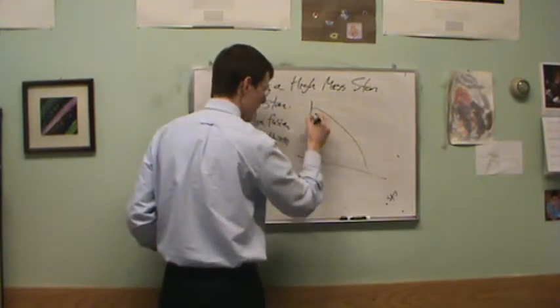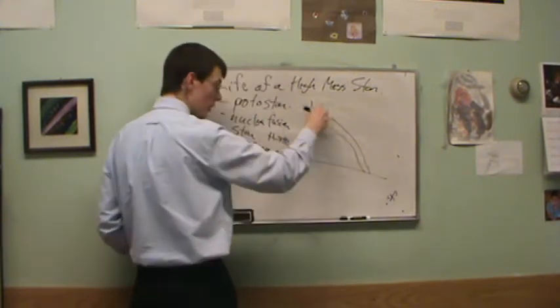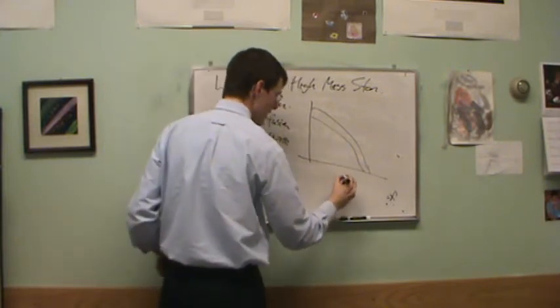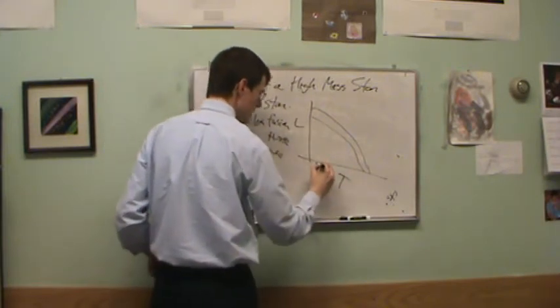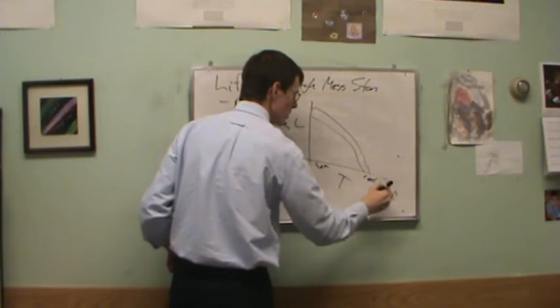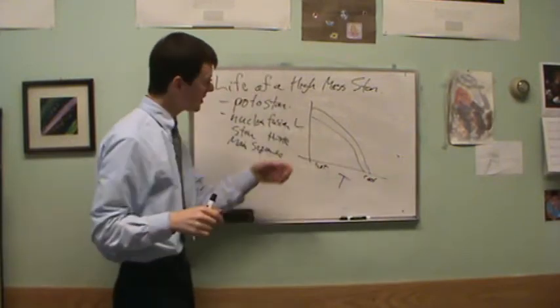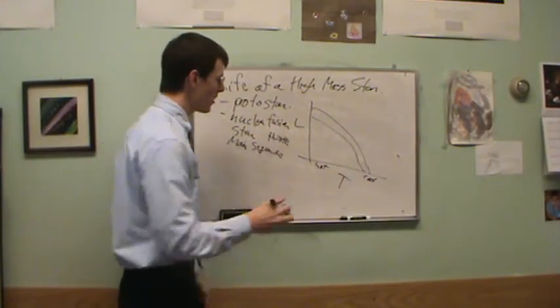So here's the main sequence. And if you look at a real graph of the main sequence, here's temperature, here's luminosity, here's hot, here's cool. So we're looking at an HR diagram. And you will notice there's kind of a knee part way down the main sequence.